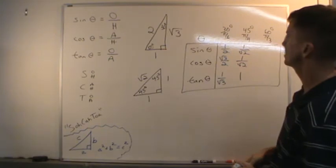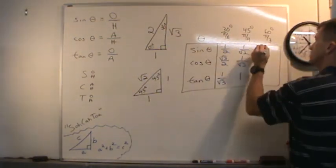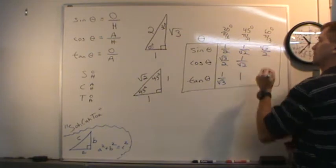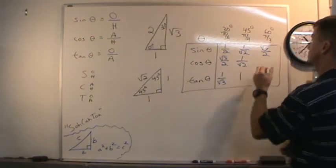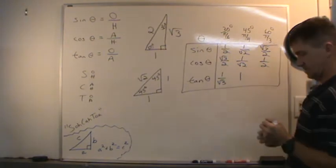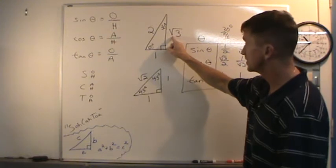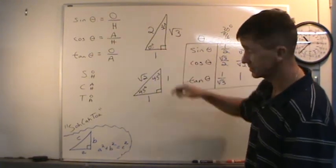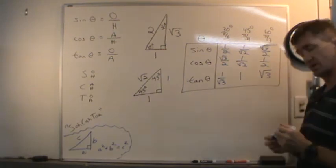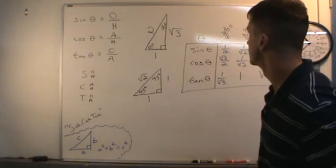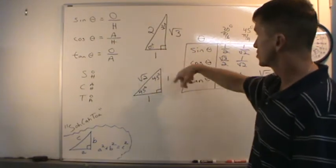Lastly, with 60 degrees: sine of 60 degrees is opposite over hypotenuse — square root of 3 over 2. Cosine of 60 degrees is adjacent over hypotenuse — 1 over 2. Tangent of 60 degrees is opposite over adjacent — square root of 3 over 1, which you can just write as square root of 3. These are very important, so make sure to remember these special right triangles.